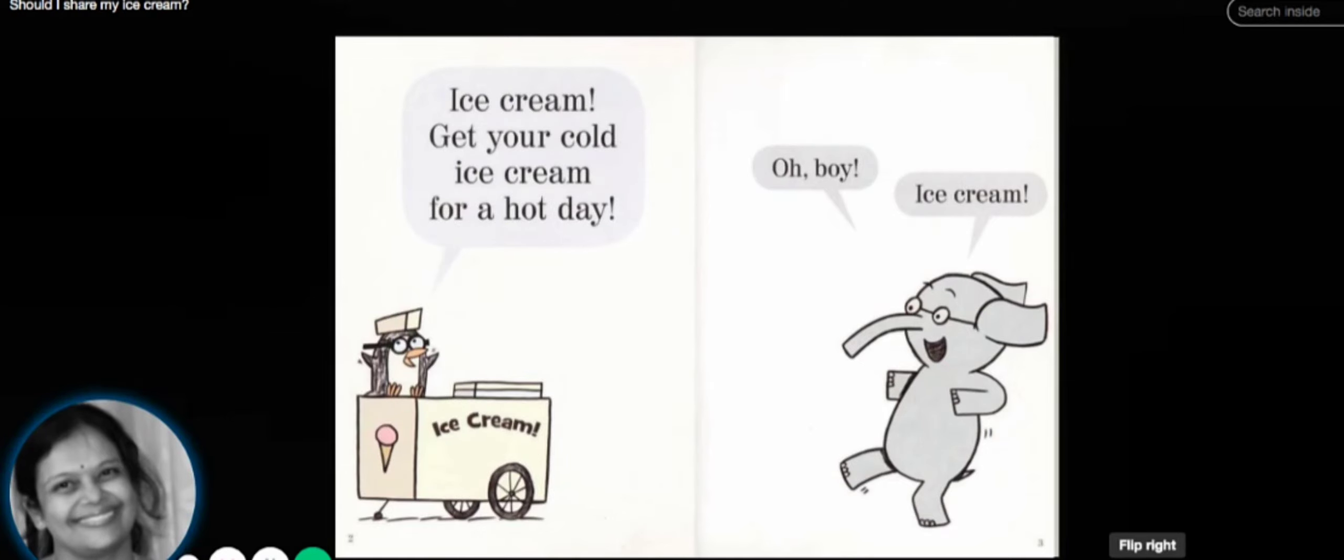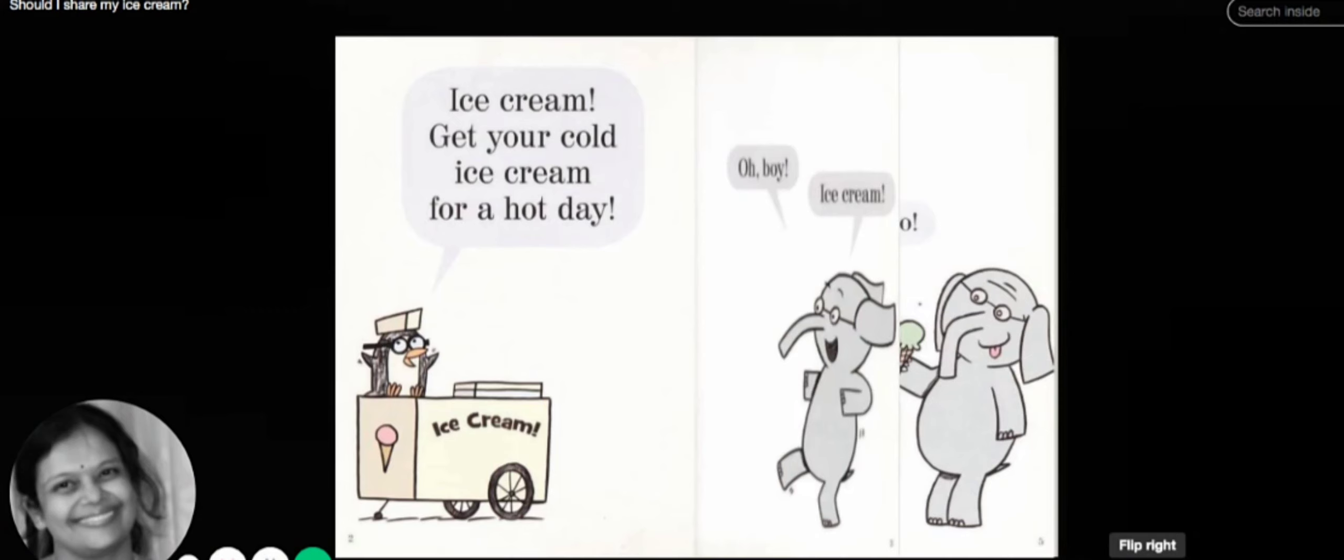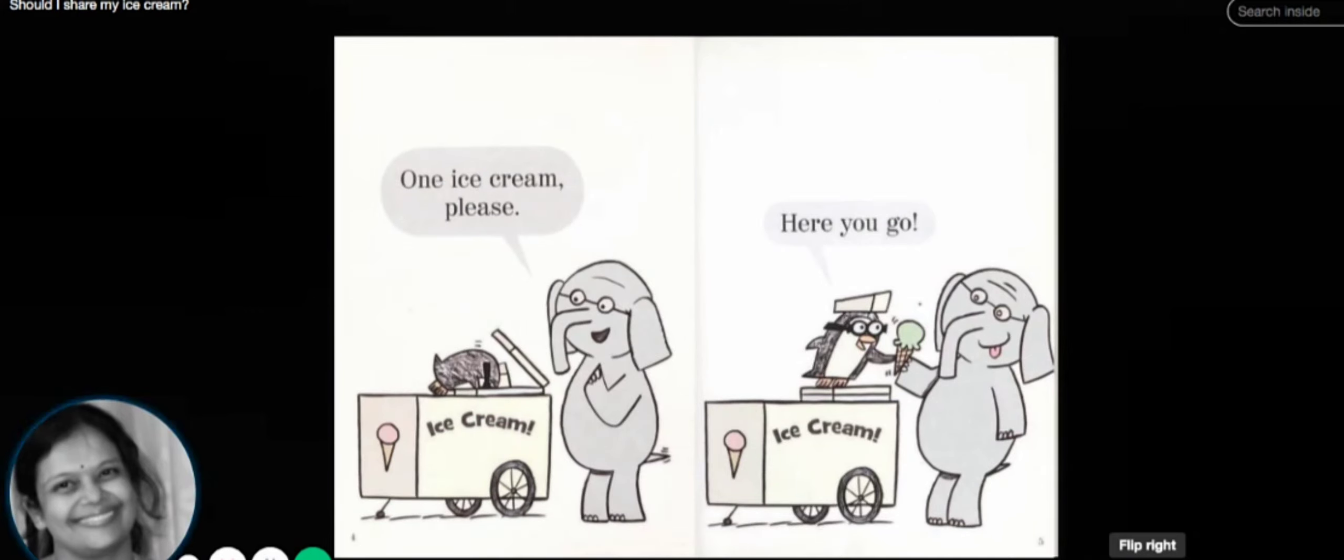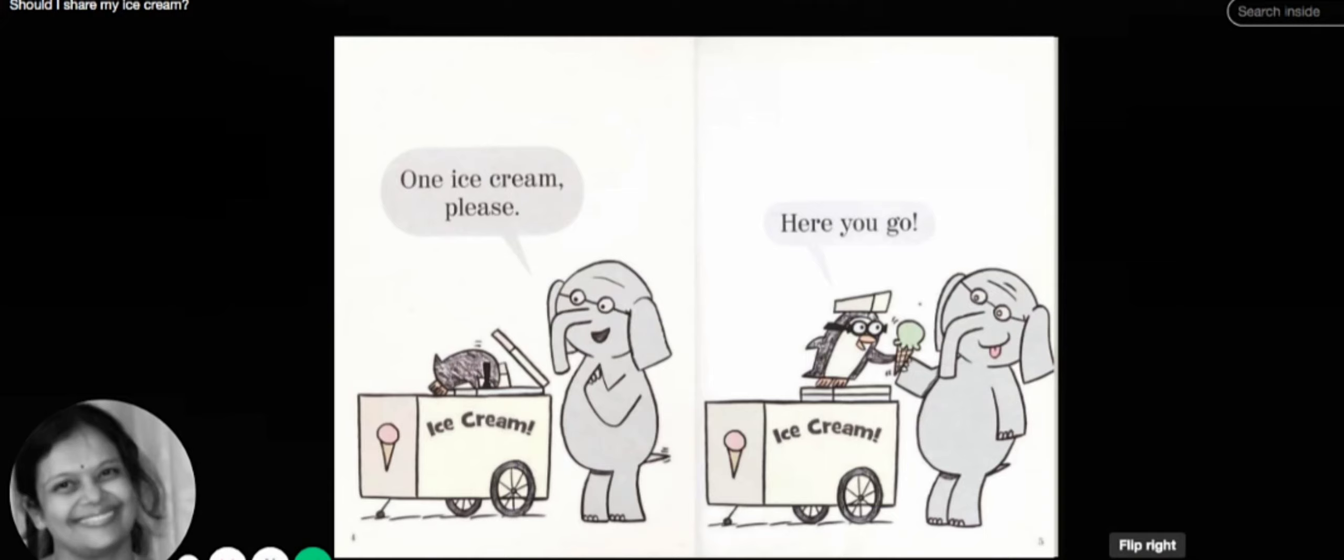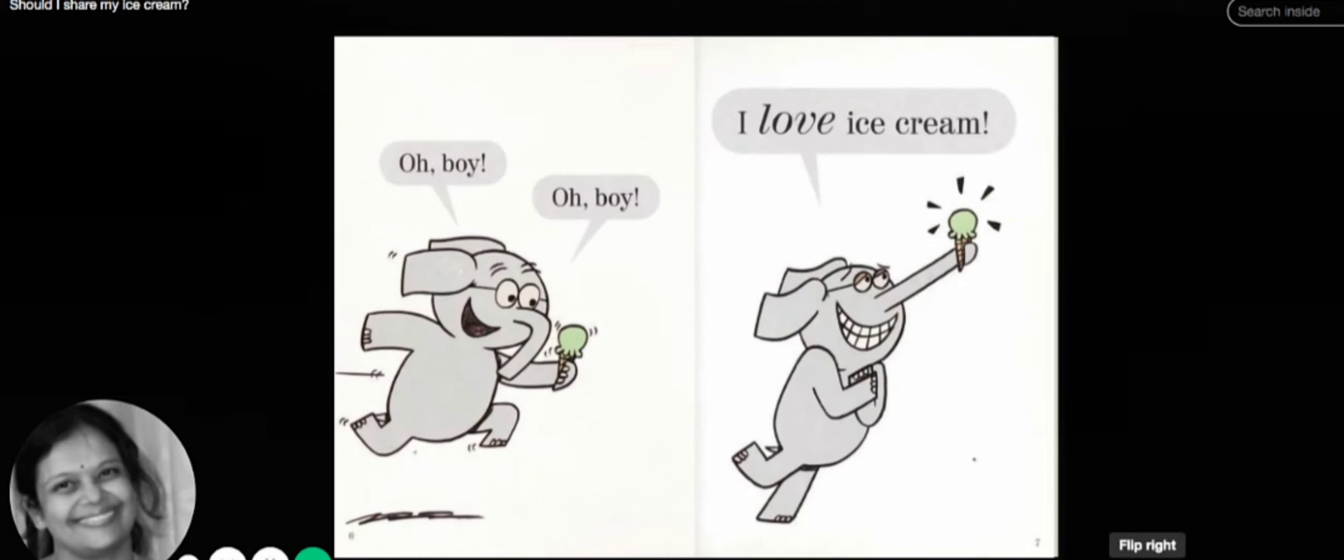Ice cream! Ice cream! Get your cold ice cream for a hot day! The elephant says, 'Oh boy, ice cream! I think I should buy one. Ice cream please!' 'Here you go,' and the penguin gives him an ice cream from the Arctic region. Oh boy, oh boy! The elephant is happy.